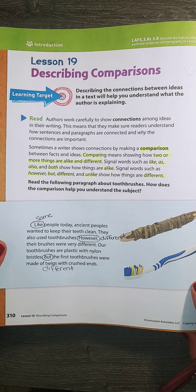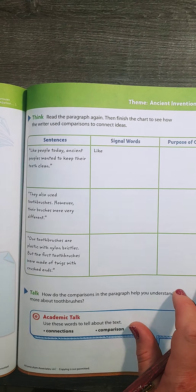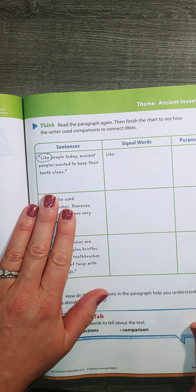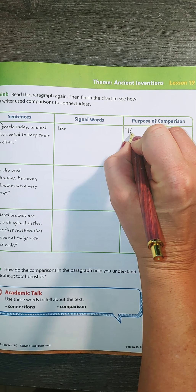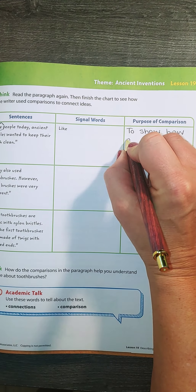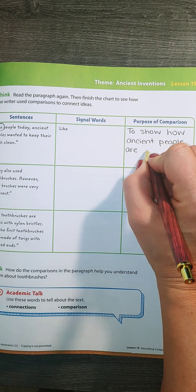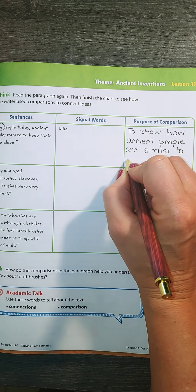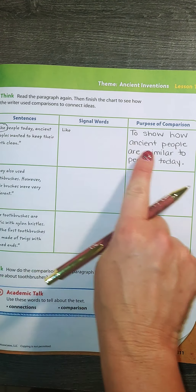Let's go ahead and fill in our chart. The first sentence we have is: 'Like people today, ancient peoples wanted to keep their teeth clean.' The signal word was like, which we already circled in our reading. The purpose of this connection was to show how ancient people are similar to people today — showing how we are the same.